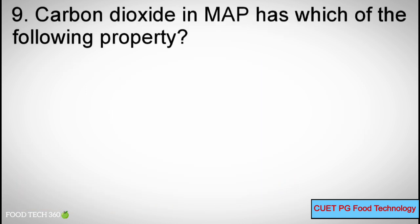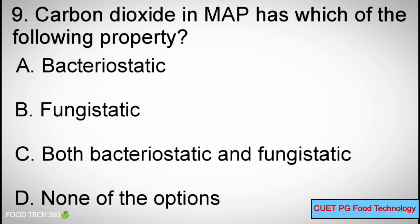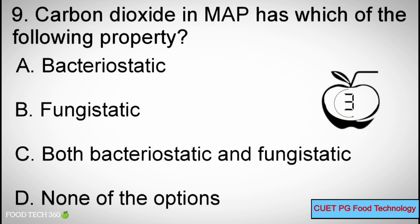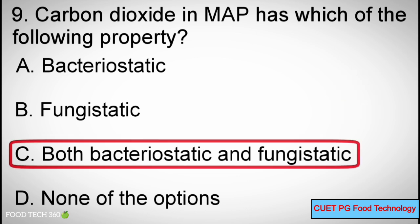Question number 9. Carbon dioxide in modified atmosphere packaging has which of the following property? Options: A) bacteriostatic, B) fungistatic, C) both bacteriostatic and fungistatic, D) none of the options. Correct answer: C) both bacteriostatic and fungistatic.